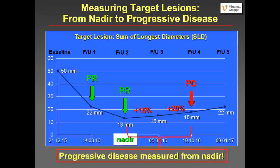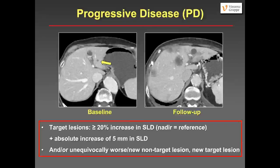Progressive disease: a small metastasis in the left lobe between segments three and four. On follow-up, lesions are growing and there are also new little metastases. This is clearly progressive disease.